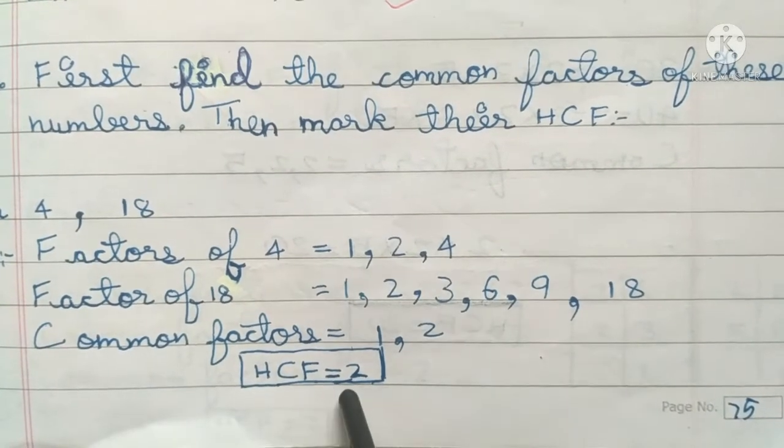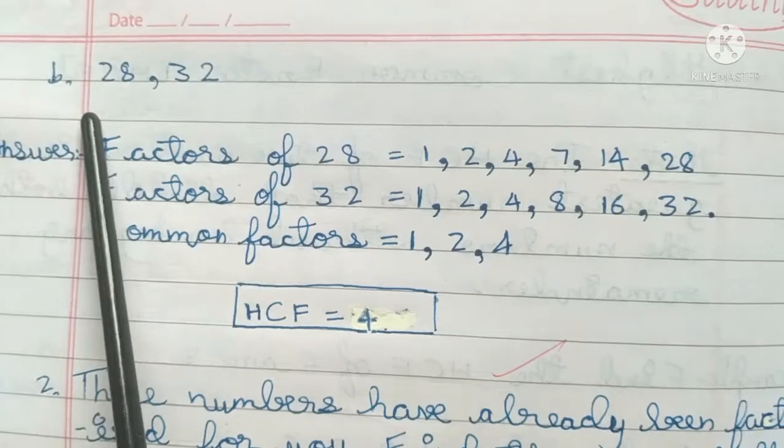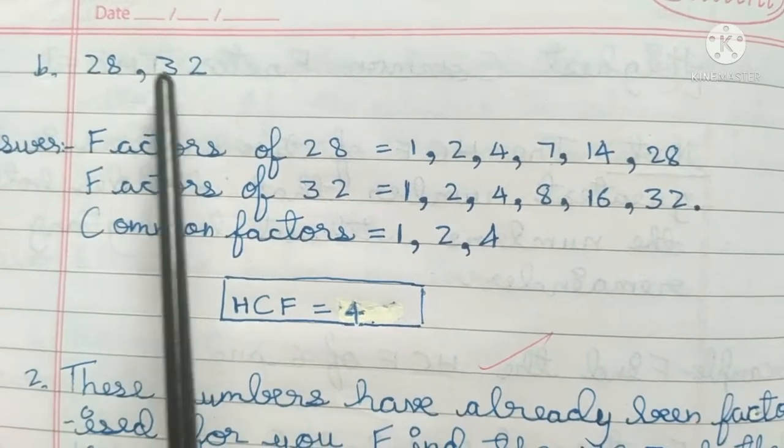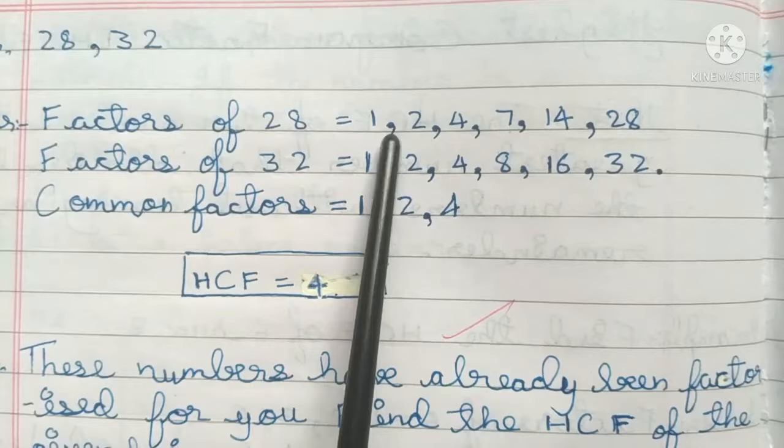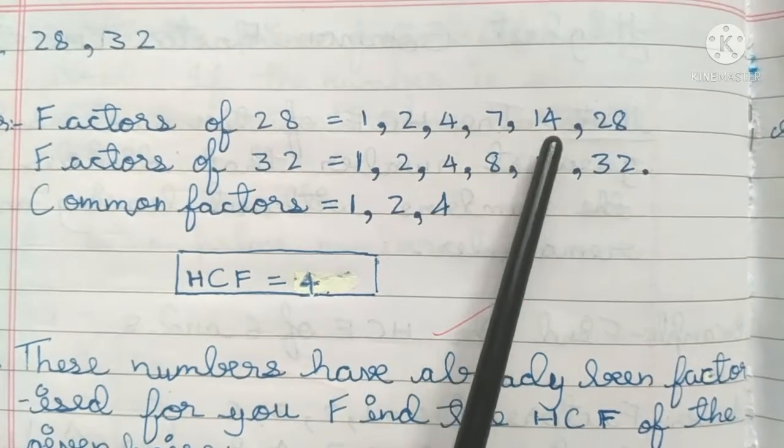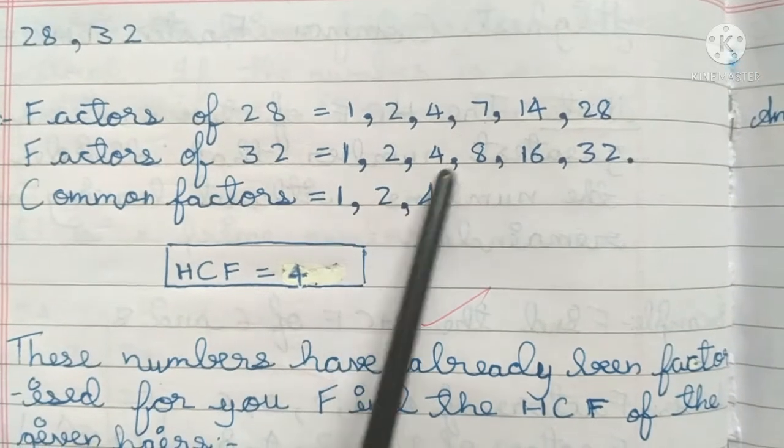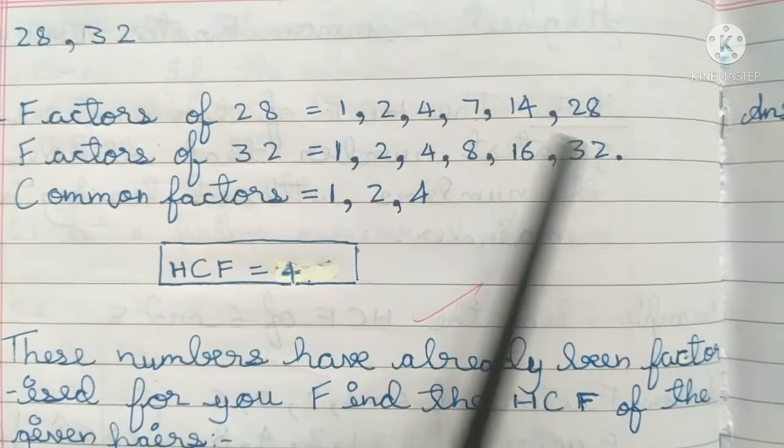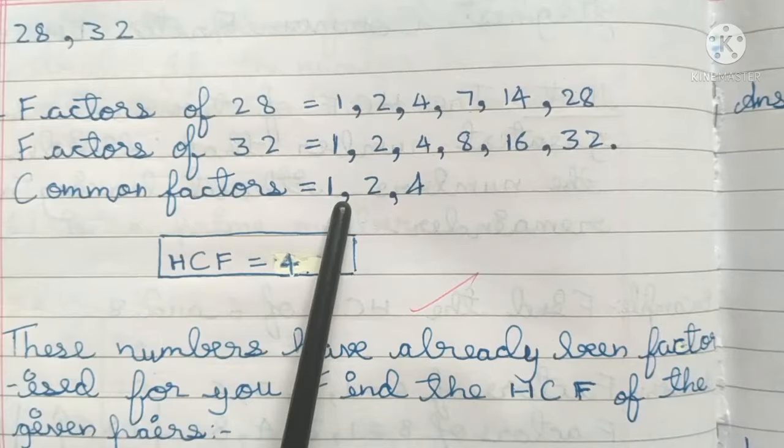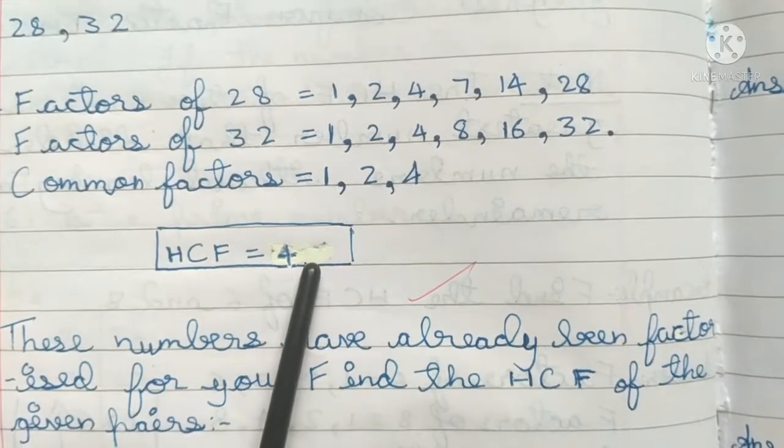Therefore, HCF is 2. Second one: 28 and 32. Answer: factors of 28 are 1, 2, 4, 7, 14, and 28. Factors of 32 are 1, 2, 4, 8, 16, 32. Therefore, common factors are 1, 2, 4. HCF is 4.